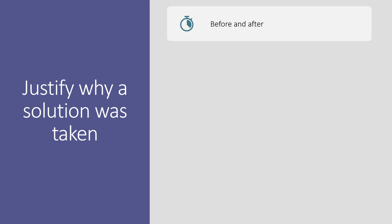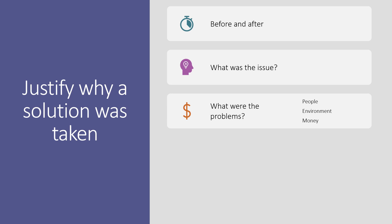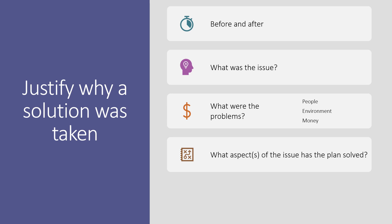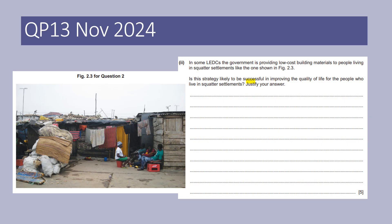One type of question is where you've been told what the plan is and you need to justify why that decision was taken. My advice is: consider what was there before and what the plan has tried to do afterwards. Make sure you clearly have in your head the issue — the problems in terms of people, the area, society, and money. This example is from question paper 1.3, November 2024: in some energy sectors, the government has provided low-cost building materials to people living in squatter settlements. Is this strategy likely to be successful in improving the quality of life for the people who live there? Justify your answer.